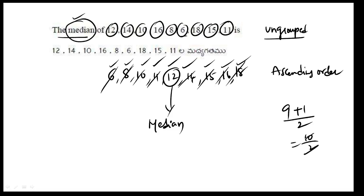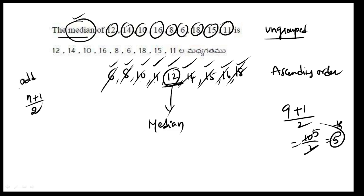The 5th number is the middle term. 1, 2, 3, 4, 5. The odd number has a middle term. The 5th is the middle number using the formula n plus 1 by 2. For an odd number of terms, the count is n plus 1 by 2.